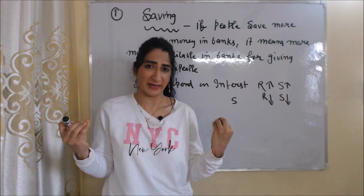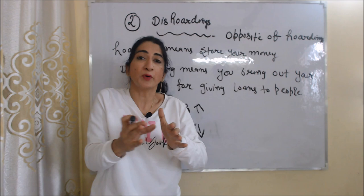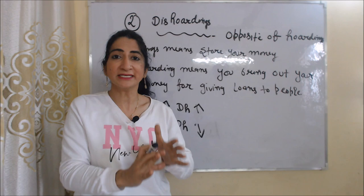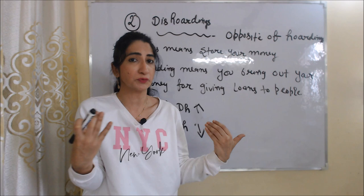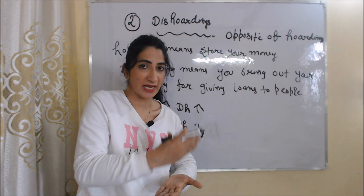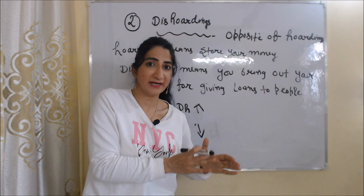The second factor is disholding. Disholding is the opposite of hoarding. In case of hoarding, you store your money. But in case of disholding, you bring out your money for giving loans to people. Disholding also depends on interest rate. If interest rate is high, you will bring out more money for giving loans. On the other hand, if interest rate is very low, you will bring out less money.